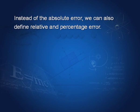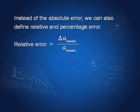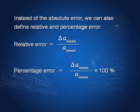Instead of absolute error, we can also define relative error and percentage error. Relative error is ΔA_mean divided by A_mean, and percentage error is ΔA_mean divided by A_mean multiplied by 100 percent.